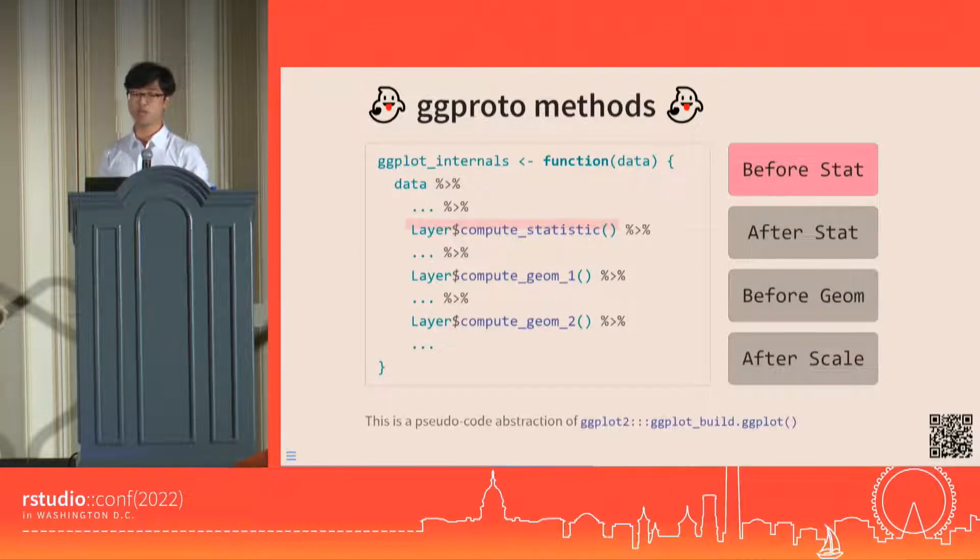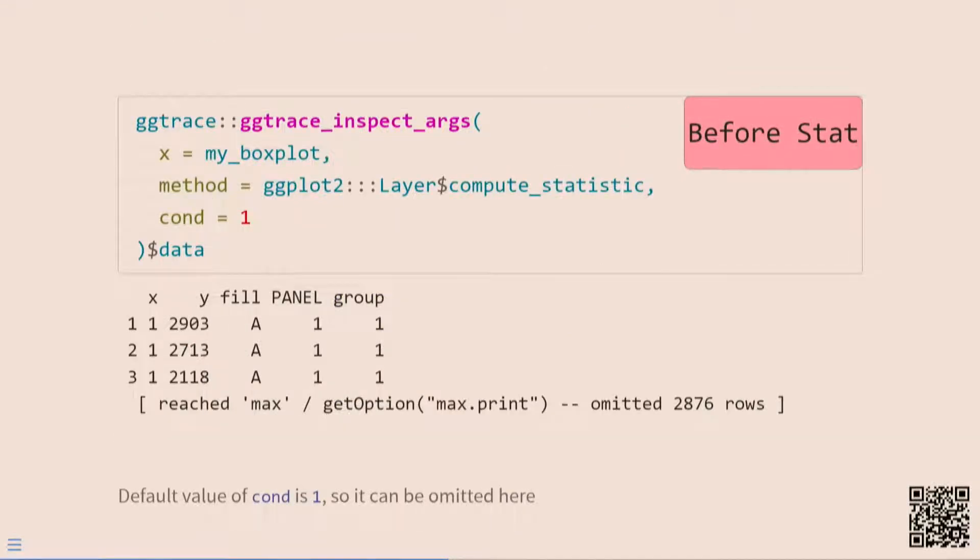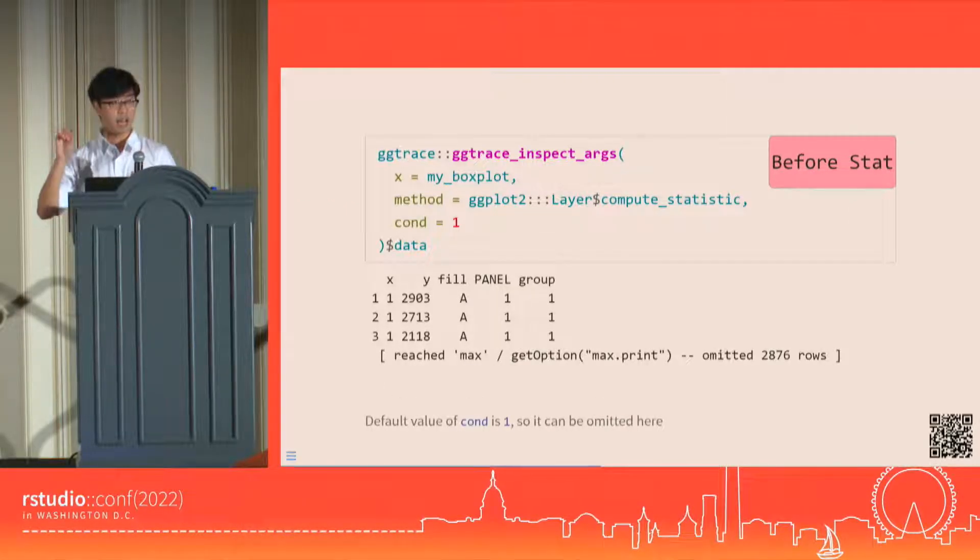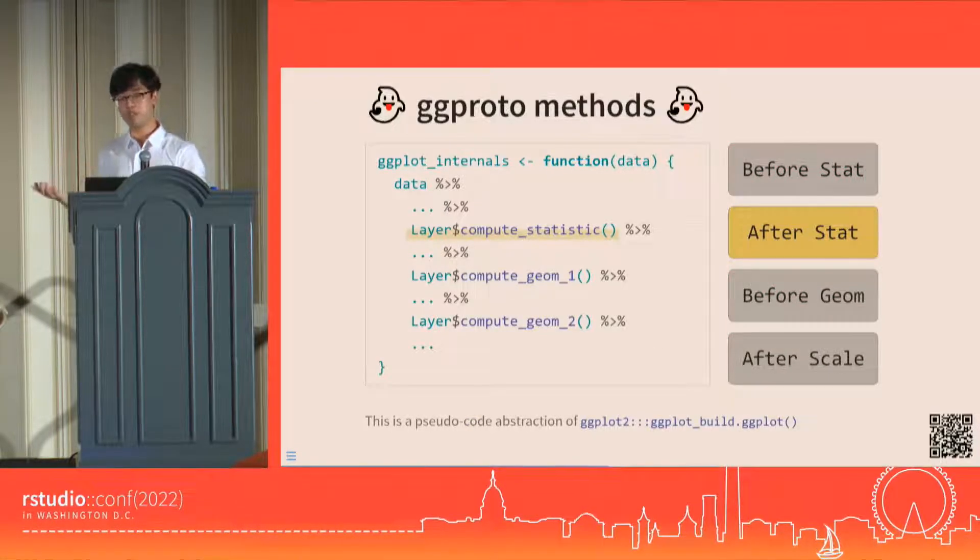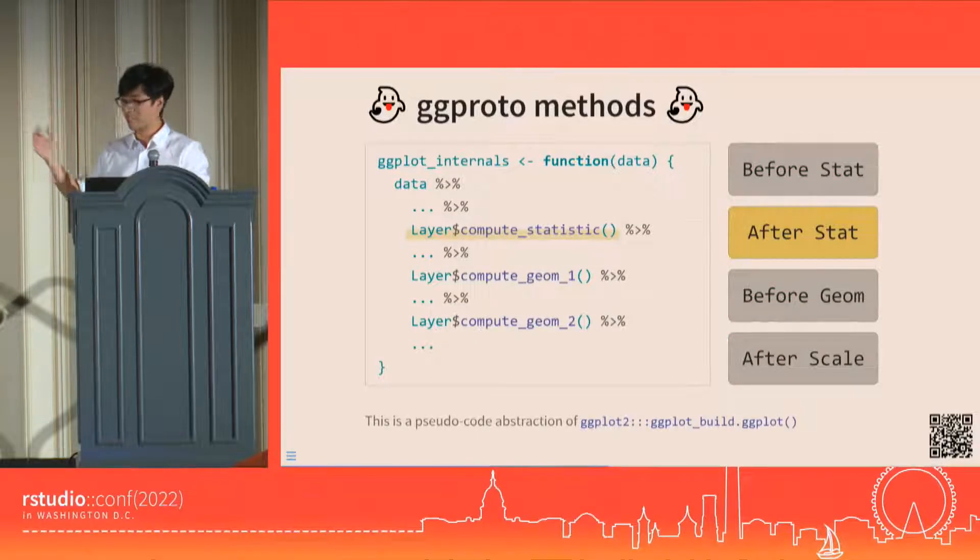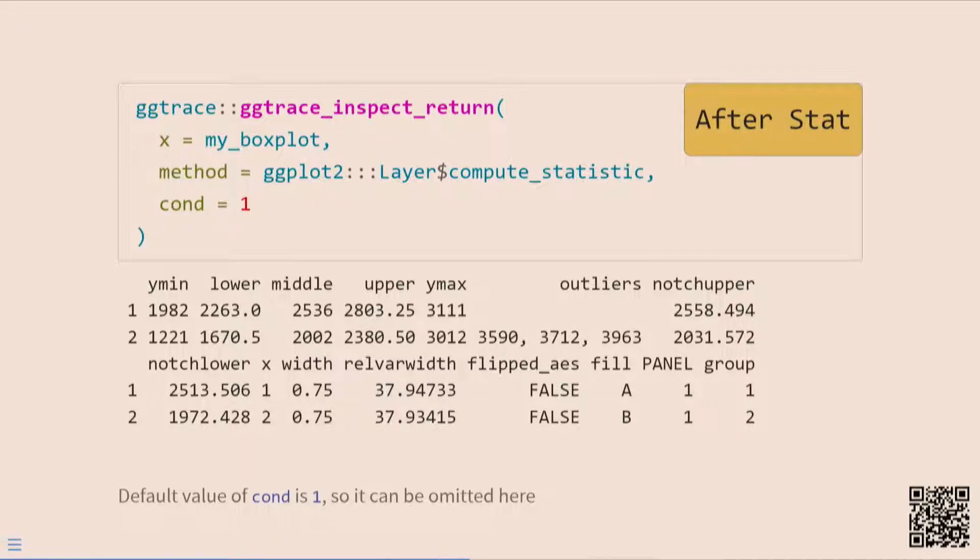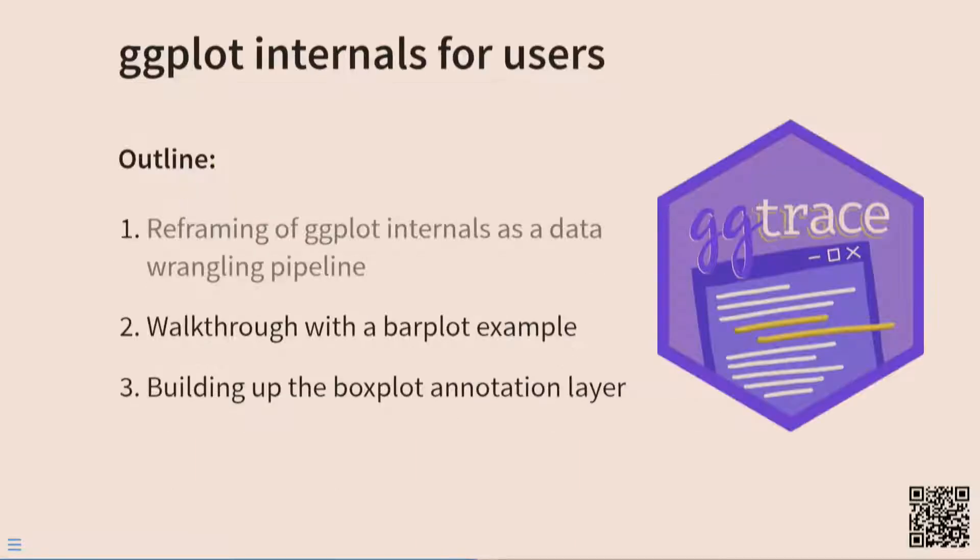For example, if we want to look at the state of a layer's data in the before stat stage, then we can use ggtrace_inspect_args to intercept the data that was passed into layer compute_statistic when it is first called for our plot, which gives us the boxplot layer's before stat data. Likewise, if we want to look at the after stat data, we need to use ggtrace_inspect_return instead to intercept the data when it is returned by that same method, which gives us the boxplot layer's after stat data.